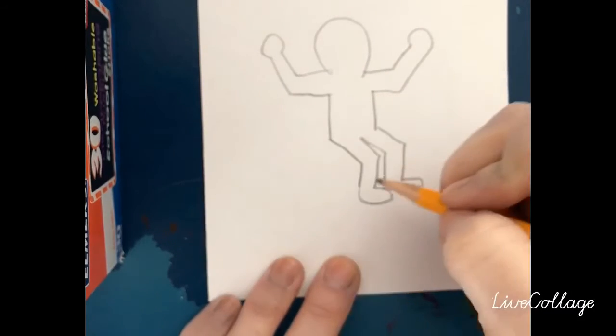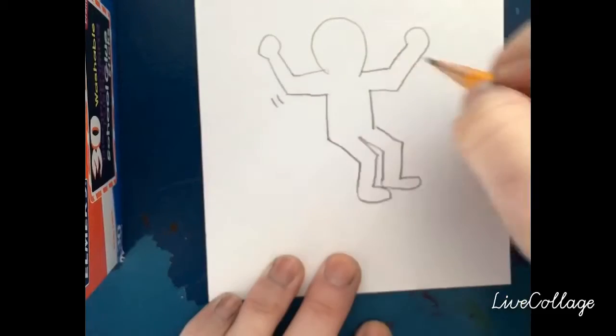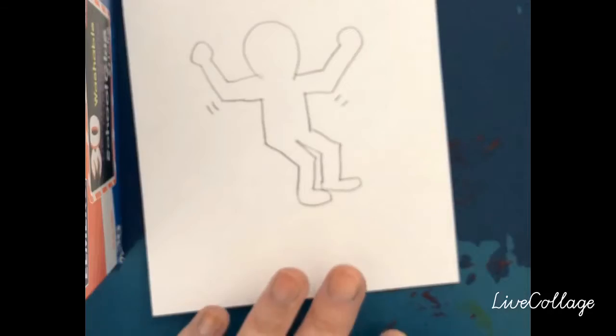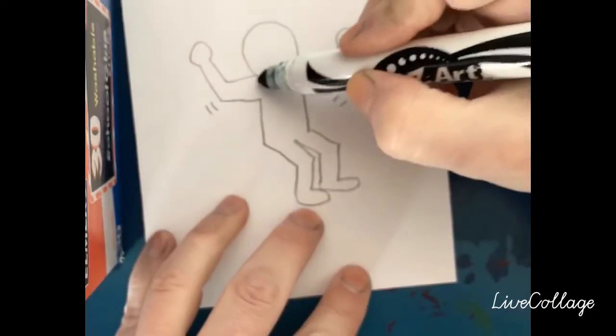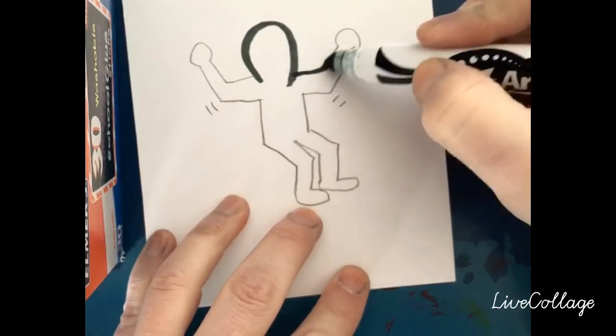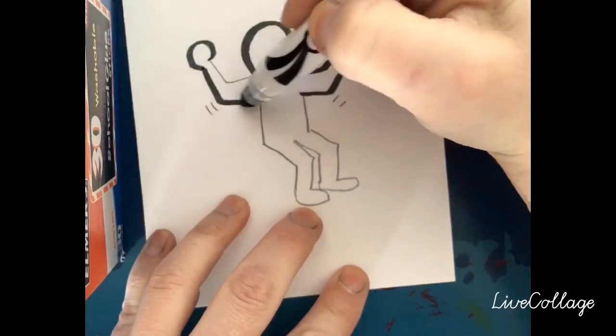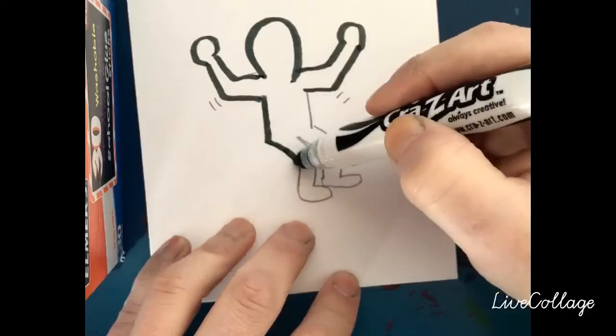Now how is this man moving? Are his arms moving? We're gonna put those two little lines that suggest movement under his elbows. Now I'm just gonna go over it with a black marker because again Keith Herring's paintings are almost always these simple black outlined figures.